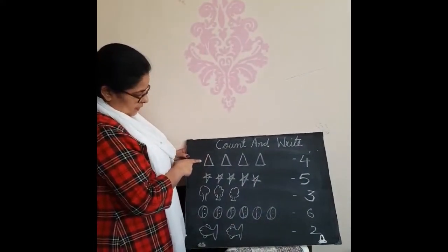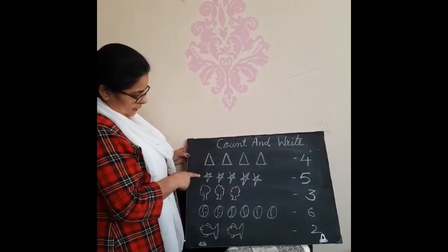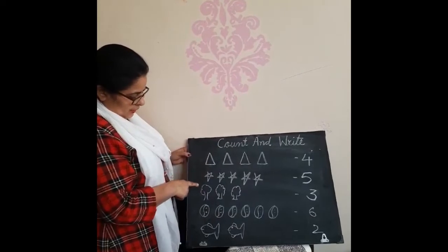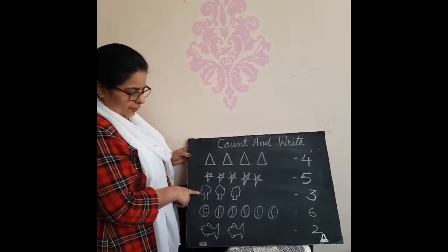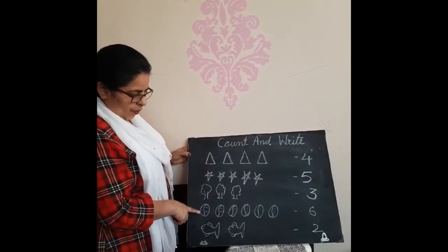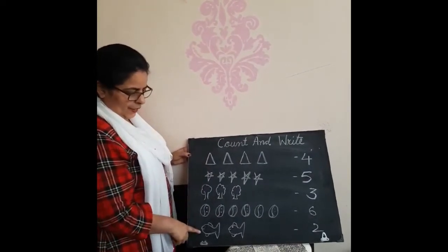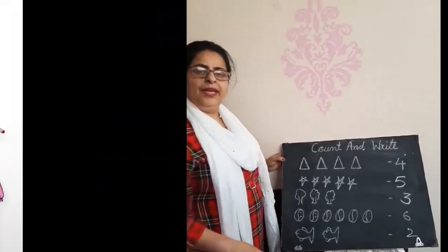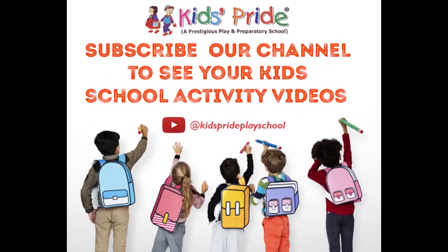4 triangles. 5 stars. 3 trees. 6 balls. And 2 fishes. Okay, bye bye.